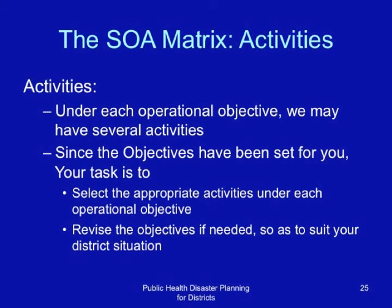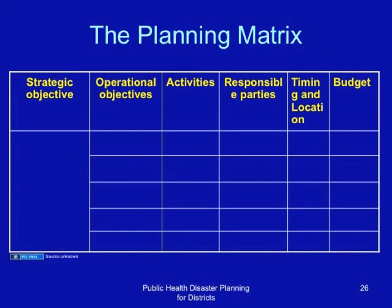This is the planning matrix you will use in planning for disasters for your district or agency. It shows strategic objectives, operational objectives, activities, responsible parties, timing and location, and an estimate of the budget. Being operational plans, they provide this level of detail so that we can know who will exactly do what in a disaster situation.